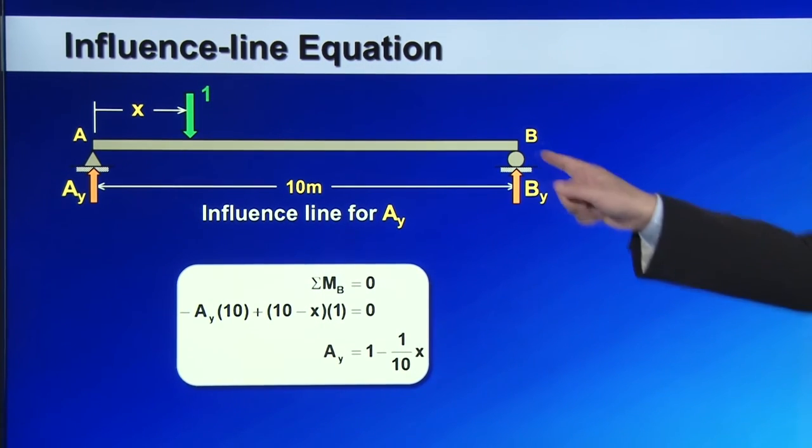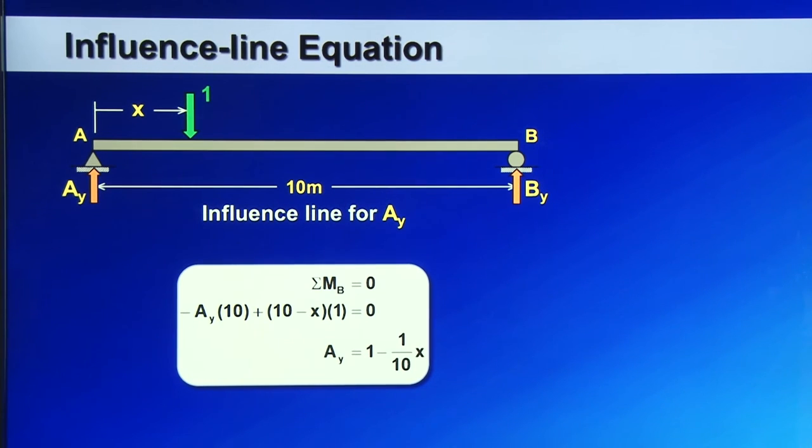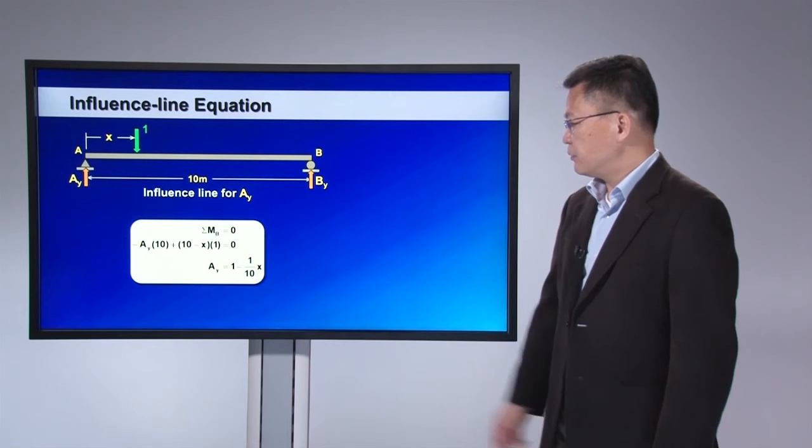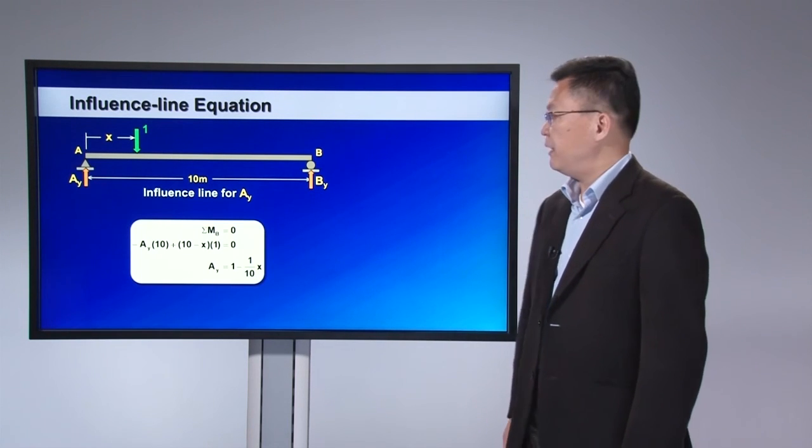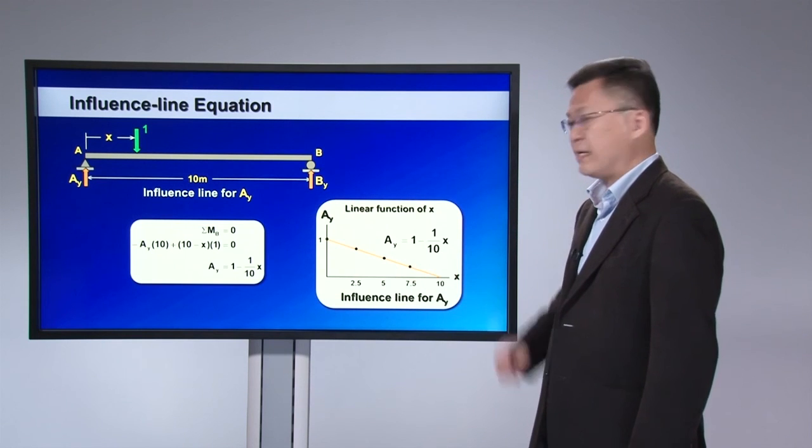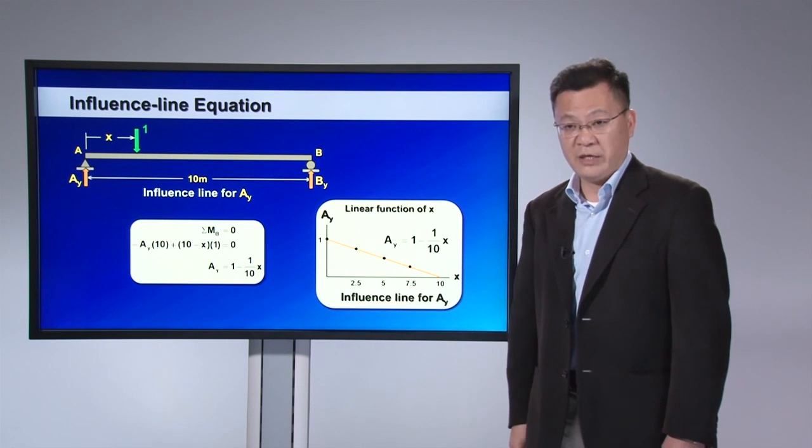finding the summation moment at point B equal to 0, and then you can directly obtain Ay as a function of x. So the results show you that Ay is equal to 1 minus 1 over 10x, and graphically it's exactly the same as what you obtained before.